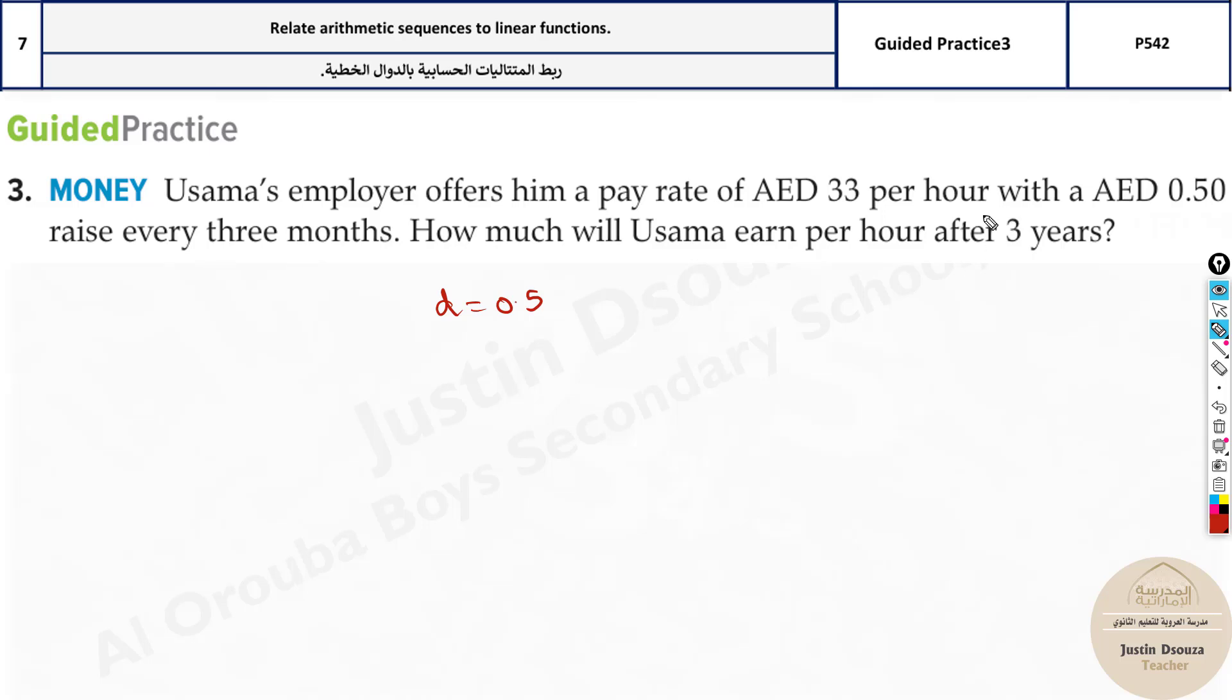After 3 years is what you need to solve. So you need to see how many 3 months are there in 3 years. In the sense, for each 3 months, there will be a jump. 3 months, next will be after 6 months, 12 months. How many will be there in 3 months? You can count it like this.